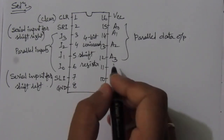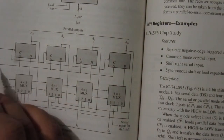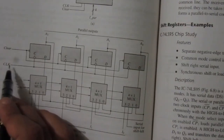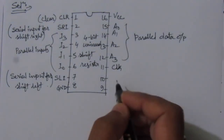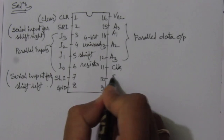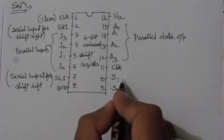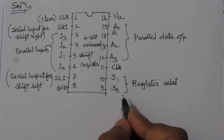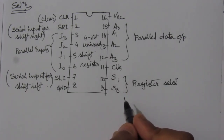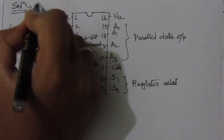Next, we define the clock input at pin 11 (CL). At pin 10 we apply select line S1, and at pin 9 we apply select line S0. These are the register select lines. Depending on the values of S1 and S0, the register will perform no change, shift right, shift left, or parallel load. This completes the block diagram of the IC for part one.